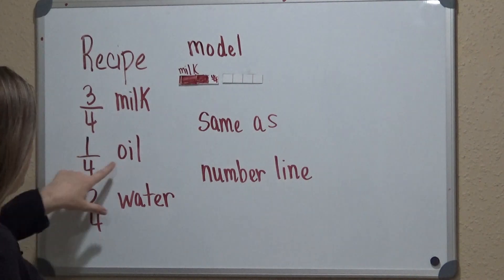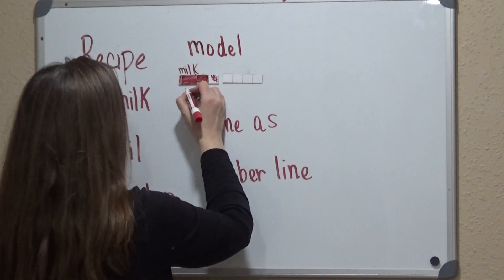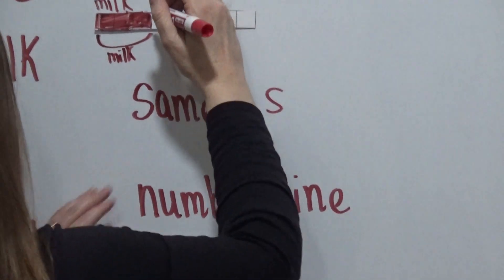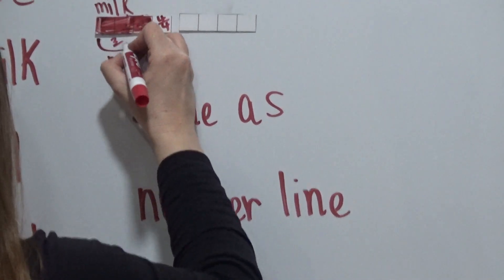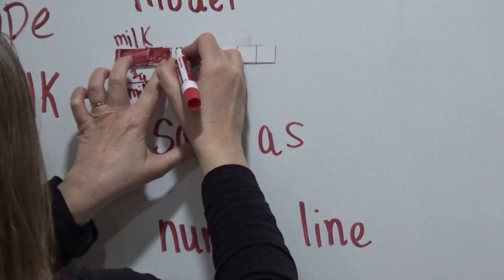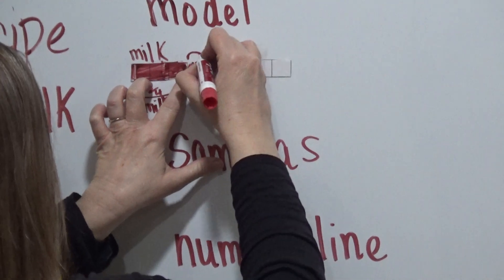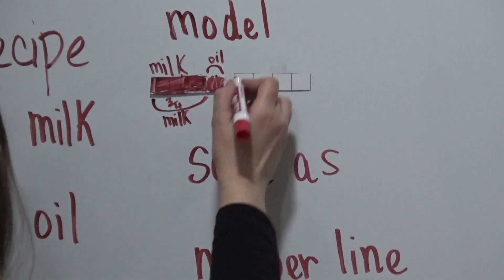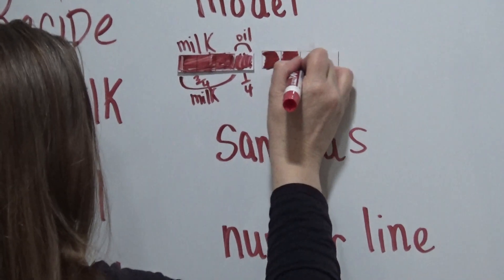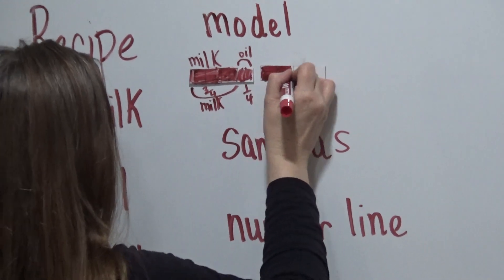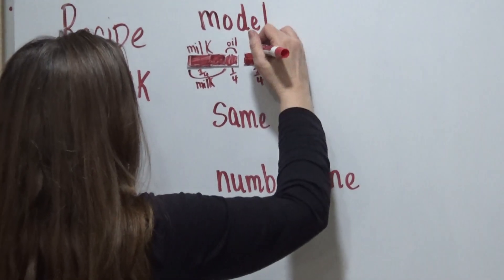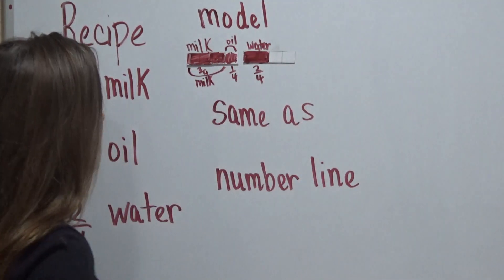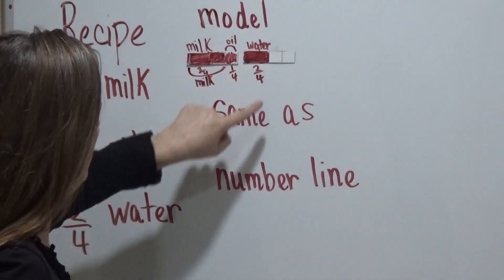Then the next one calls for oil — 1 fourth of a cup. So we have 3 out of 4 for milk, and then we have 1 out of 4 for the oil. So we'll go ahead and shade that in and write oil, which is 1 out of 4. And then we have 2 out of 4, which is water. So we shade in 2 out of 4, which is water. So we have milk at 3 fourths, oil at 1 fourth, and water at 2 fourths.